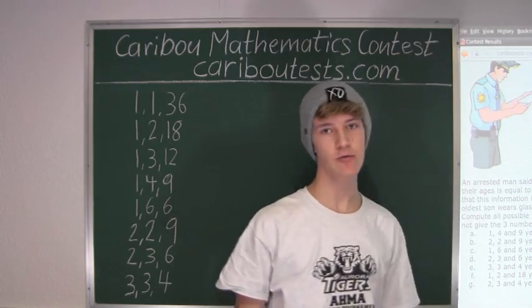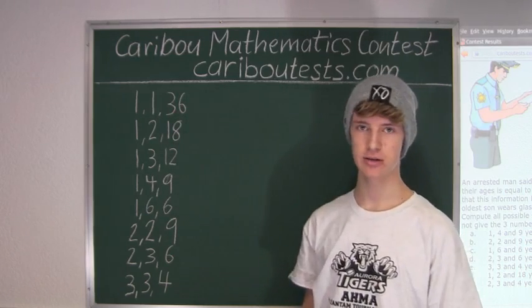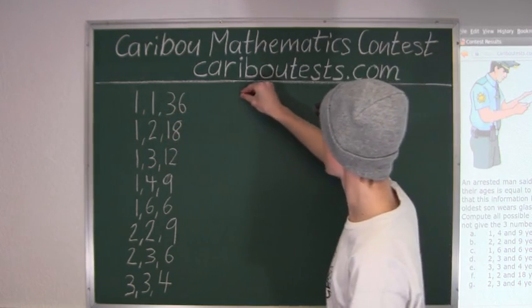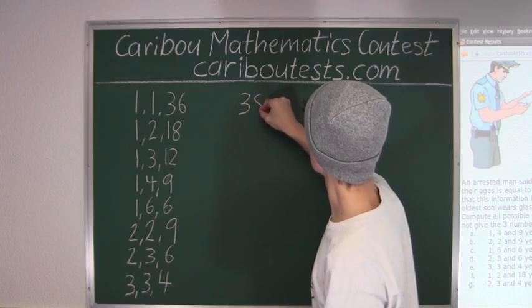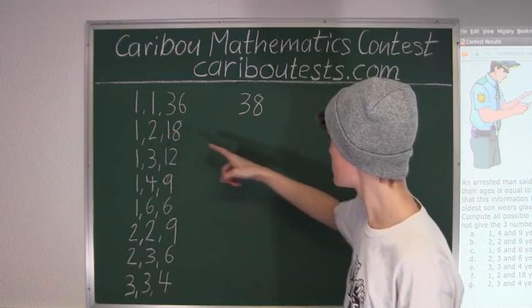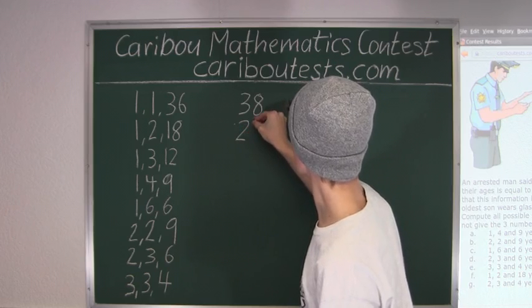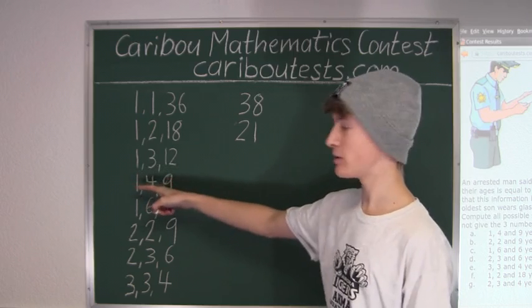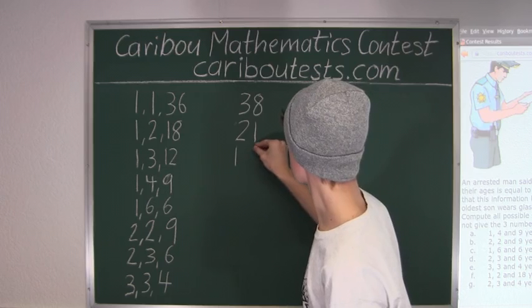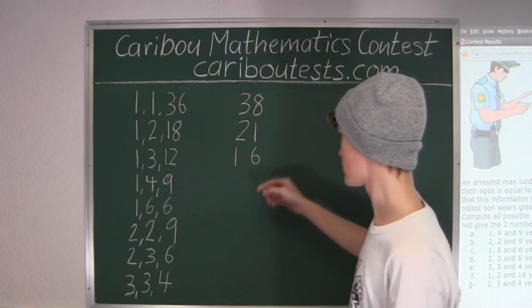Now, following the hint from the question, we want to find the sums of these ages. So, 1 plus 1 plus 36 is 38. 1 plus 2 is 3 plus 18 is 21. Then 1 plus 3 is 4 plus 12 is 16. Then 1 plus 4 is 5 plus 9 is 14.